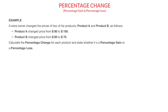In this video, we learn how to calculate percentage change, and we'll also see how to recognize when we're dealing with a percentage gain or a percentage loss. To do that, we're going to work through an example where a store owner changed the prices of two products: Product A changed from $80 to $100, and Product B changed from $80 to $75. We need to calculate the percentage change for each product and state whether it's a percentage gain or a percentage loss.